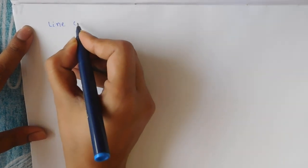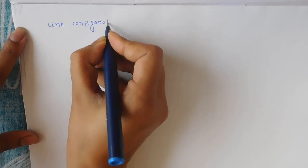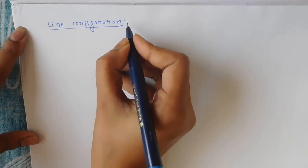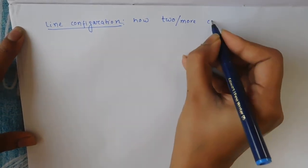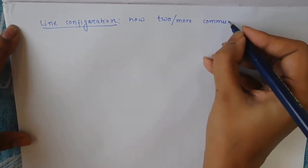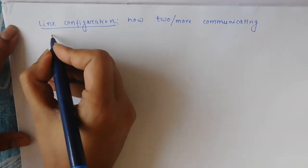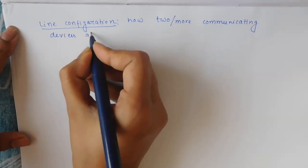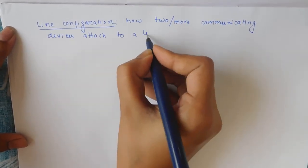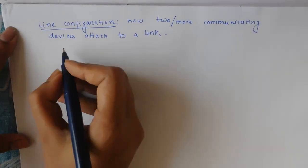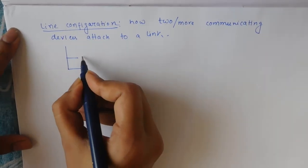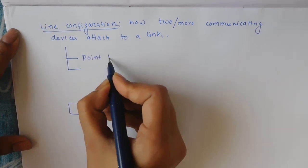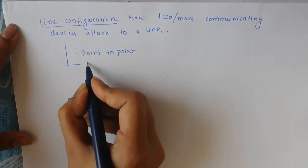Now we discuss line configuration. Line configuration defines how two or more communicating devices attach to a link — that is, how the nodes are connected through a link. It may be categorized into point-to-point and multipoint configuration.